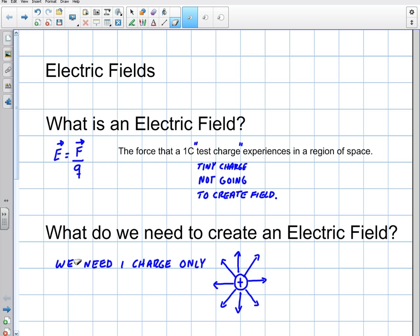In the last video, I'm defining what an electric field was. An electric field is the force that a one-coulomb test charge would experience in a region of space. It's force per unit charge. So it's not a force, but it's saying if there was a one-coulomb charge in space, what force would it experience if there was a charge.